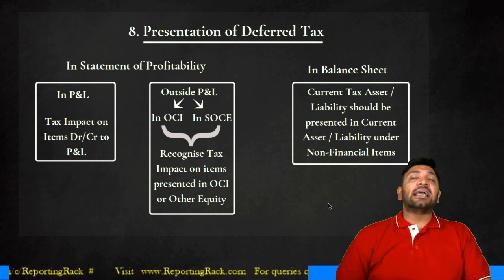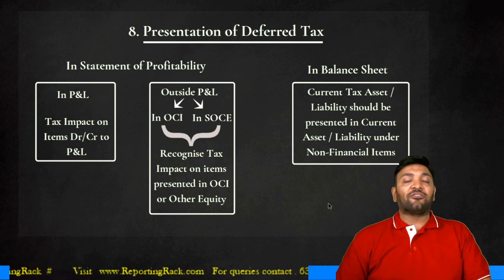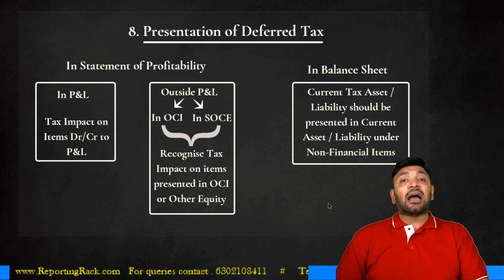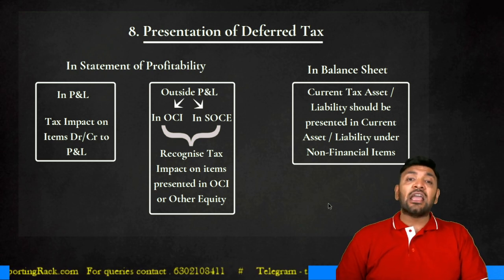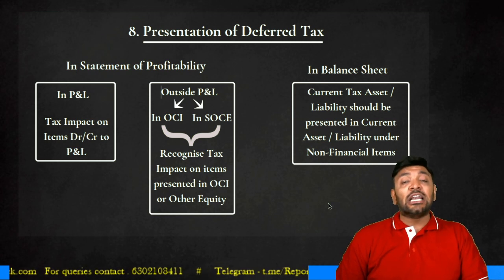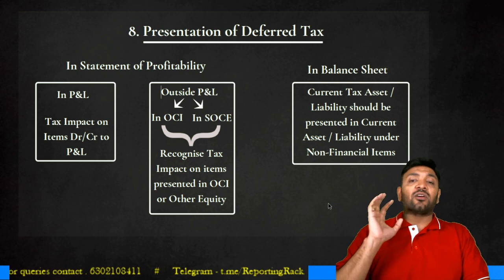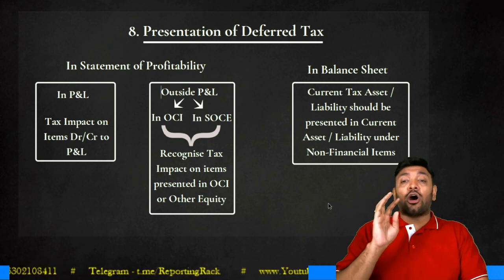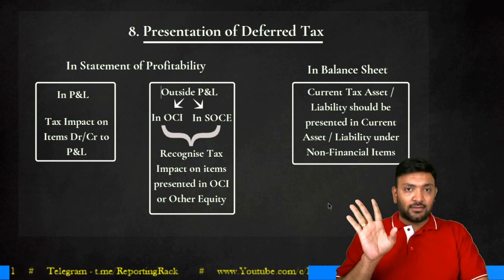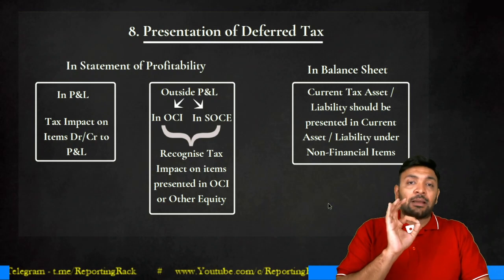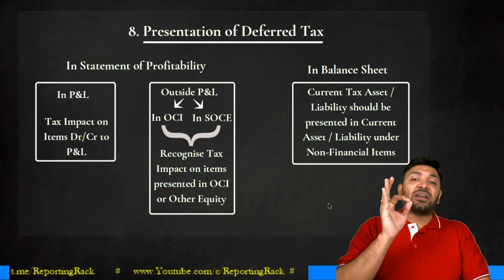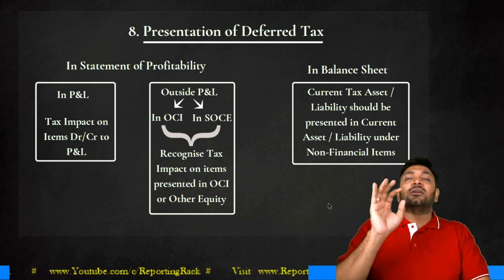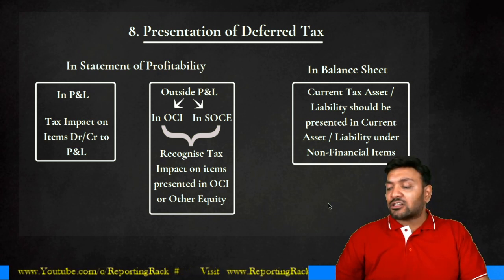Presentation of deferred tax is the same as current tax. In P&L, present deferred tax for all items debited or credited in P&L. For items not recognized in P&L but in OCI or statement of changes in equity, present deferred tax individually for each item in OCI and equity. In the balance sheet, present as current or non-current depending on when the deferred tax is expected to reverse — current if within 12 months, non-current if beyond 12 months. Remember: deferred tax is non-financial in nature, just like current tax.